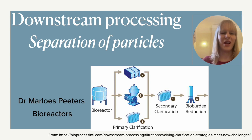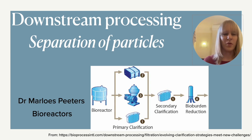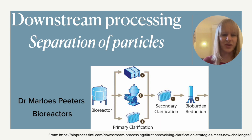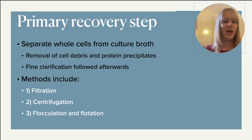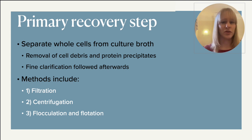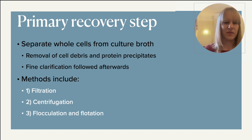Welcome to the next video in the playlist on downstream processing in the pharmaceutical industry. Today's video will focus on the separation of particles — specifically the initial step where you start to harvest the material and where clarification happens. We'll mainly focus on three different techniques. In the primary recovery step, the first thing we want to do is separate the whole cells from the culture broth, removing cell debris, protein precipitates, and other things to obtain your pure product. After that comes finer clarification and final purification.